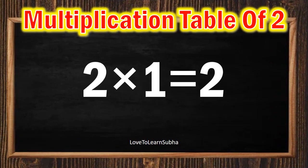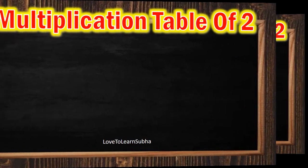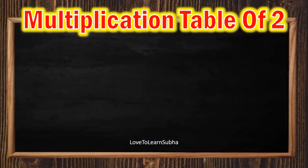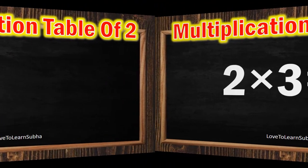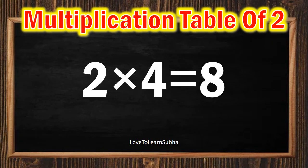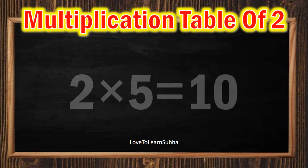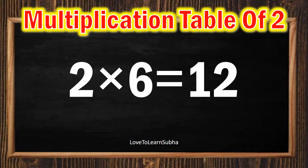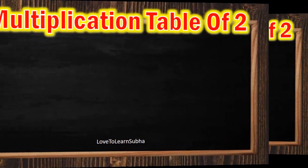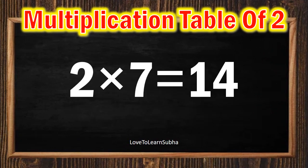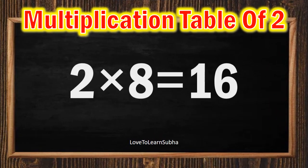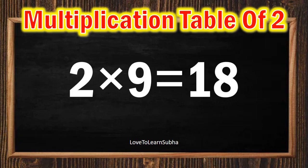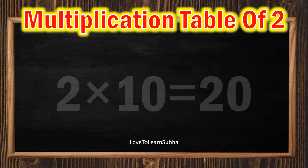2 1s are 2, 2 2s are 4, 2 3s are 6, 2 4s are 8, 2 5s are 10, 2 6s are 12, 2 7s are 14, 2 8s are 16, 2 9s are 18, 2 10s are 20.